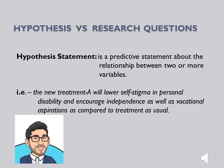When talking about a hypothesis, there are usually two main forms: a hypothesis statement and a research question. They are essentially the same, but phrased differently. A hypothesis statement is a predictive statement about the relationship between two or more variables. Here's a quick example: the new treatment A will lower self-stigma and personal disability and encourage independence as well as vocational aspirations as compared to treatment as usual.